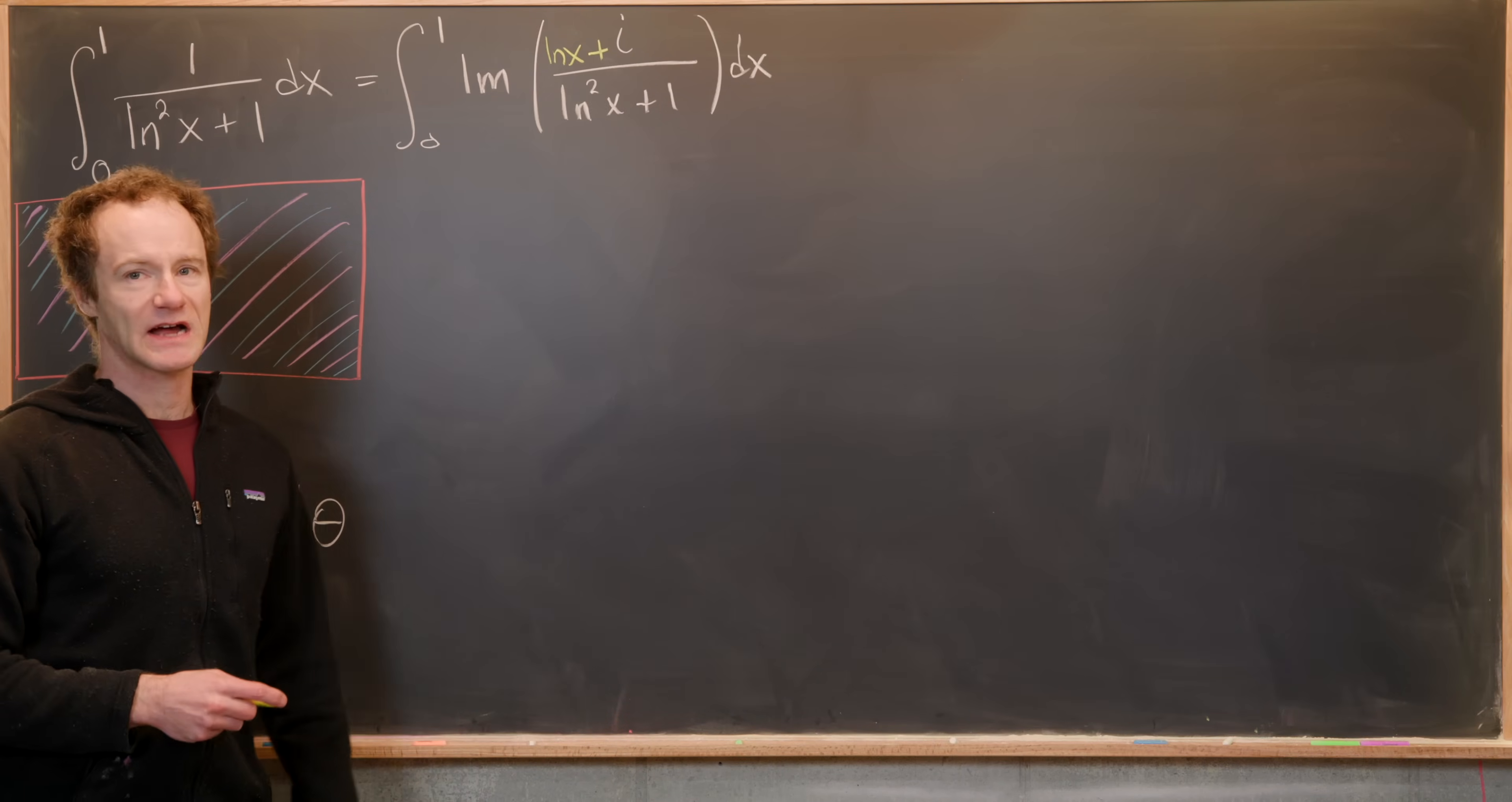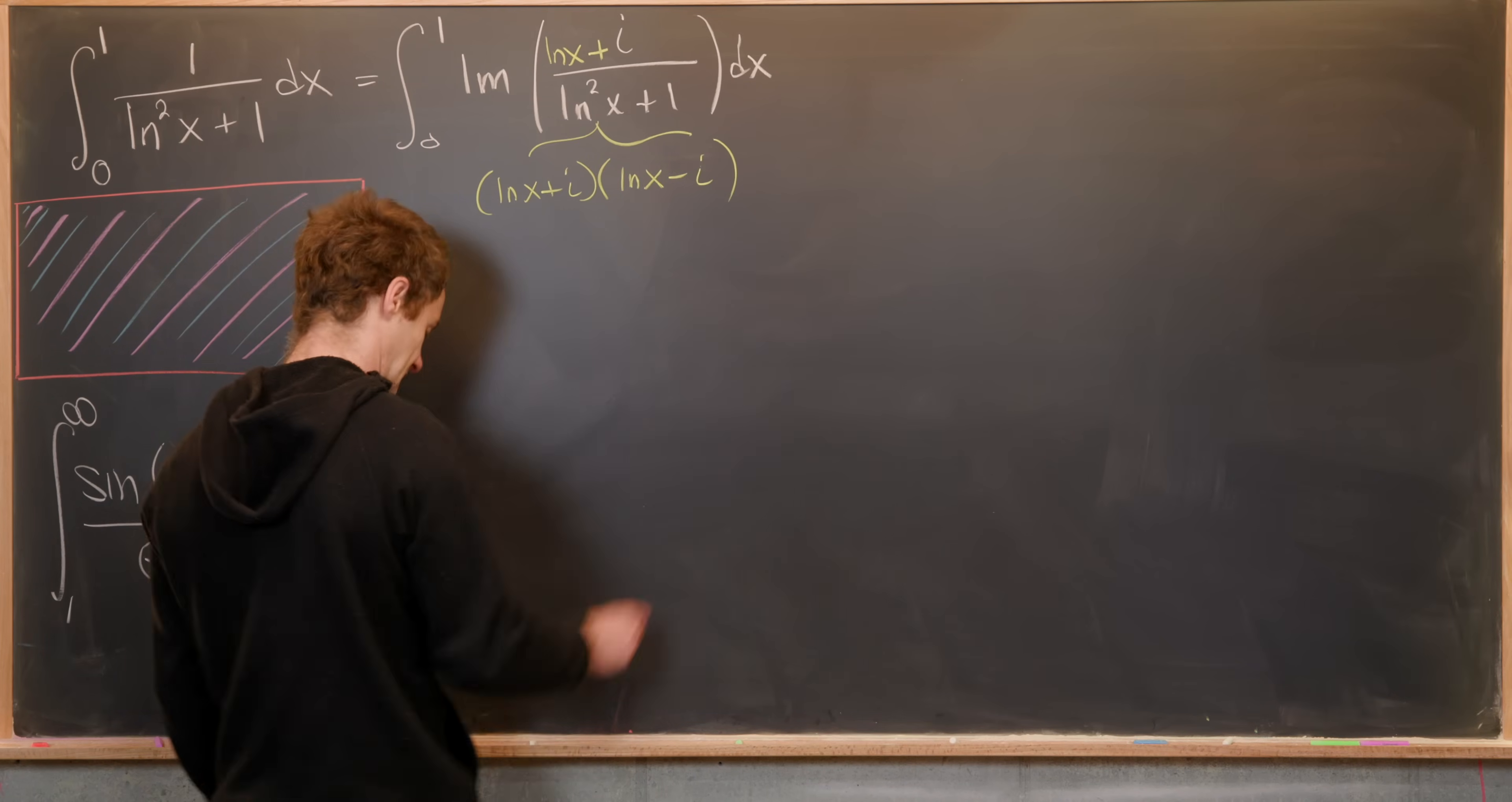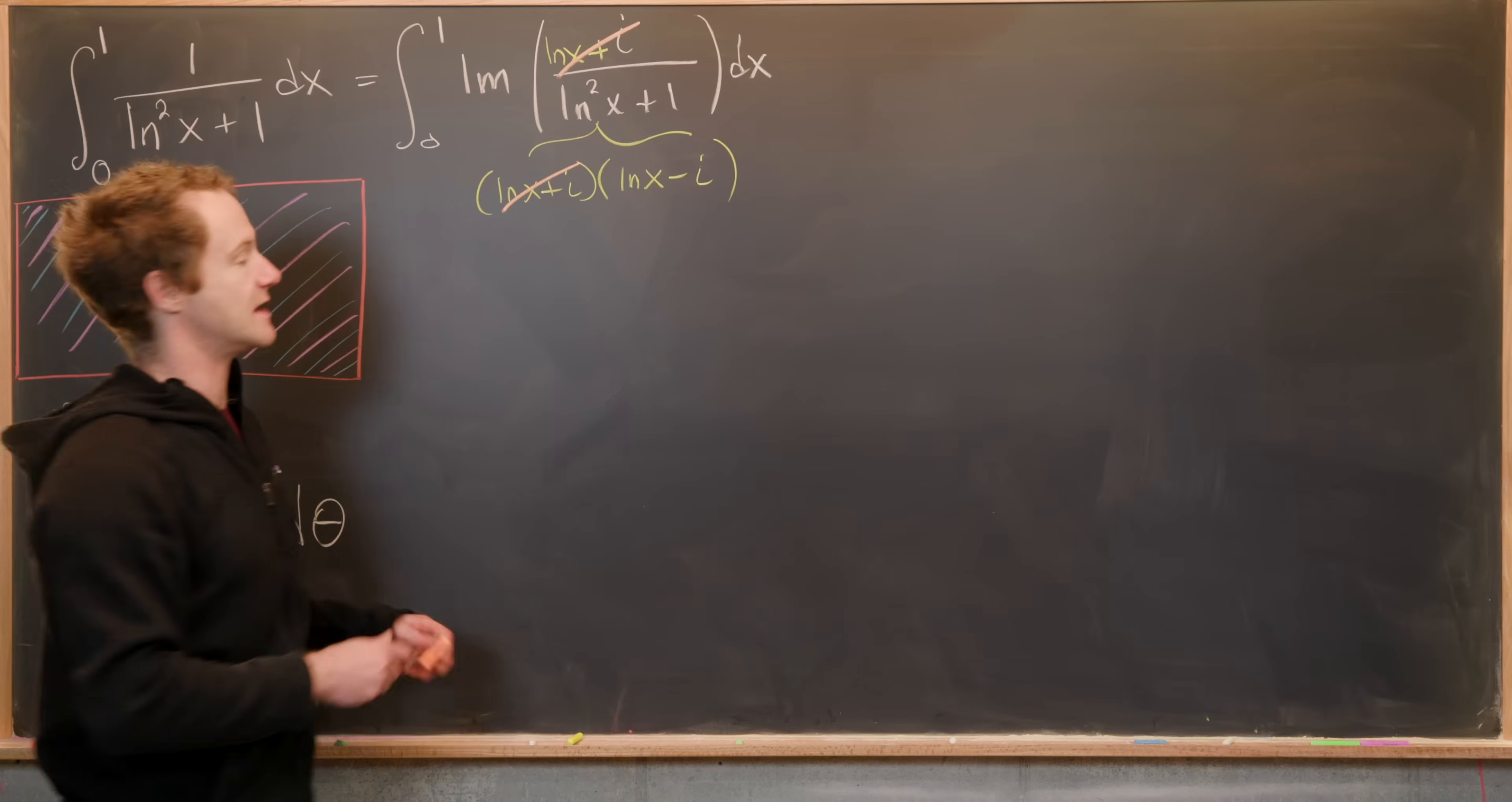So what should I add to the numerator that's real? I'm going to add the natural log of x. That's because this denominator factors like in terms of complex conjugates, it factors like (ln(x) + i)(ln(x) - i). And so this takes maybe the most heinous part of this integral, which is a squared natural log in the denominator, and turns it into a linear natural log in the denominator by canceling this guy with this guy right here.